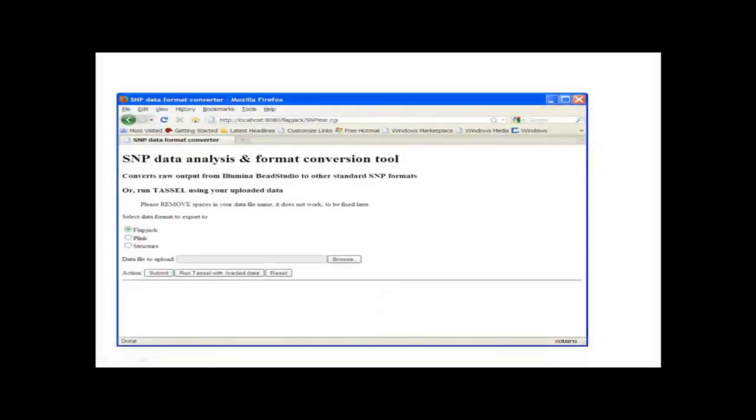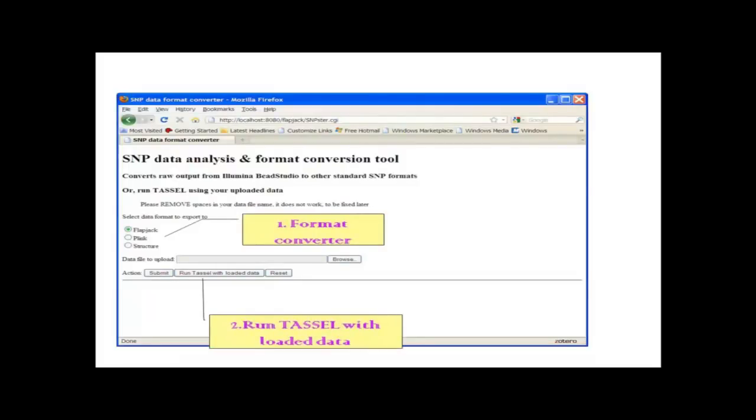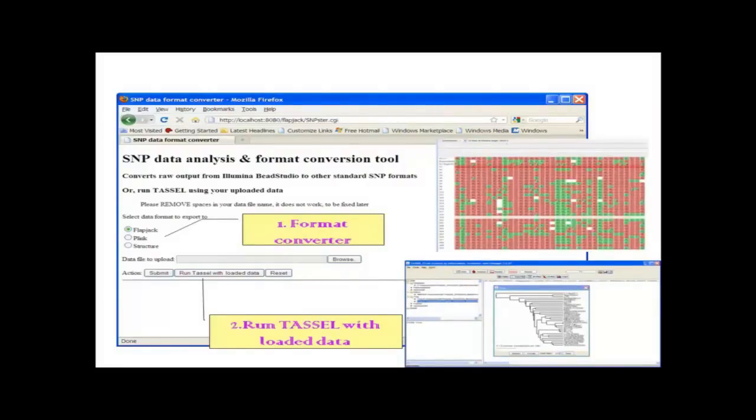Association Mapping: the association mapping is a high-resolution based method for mapping candidate genes. It involves the use of bioinformatics tools and databases and it is based on the concept of linkage disequilibrium. For maize association analysis, a software called TASSEL is used to examine the nucleotide polymorphic rate association. The raw output from the Illumina Bead Studio can be converted into standard SNP formats by the format converter and the TASSEL can be run with the loaded data. Both the phenotype and the genotypic data can be given as an input and the association analysis can be studied.